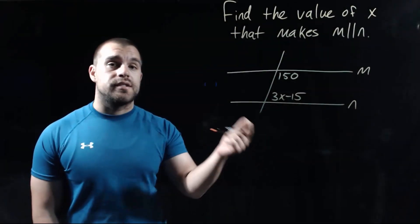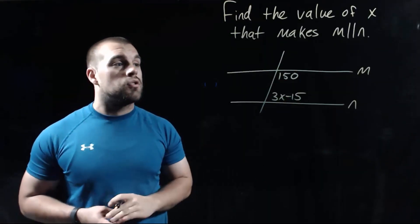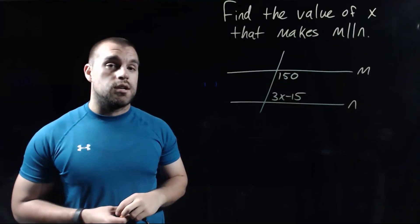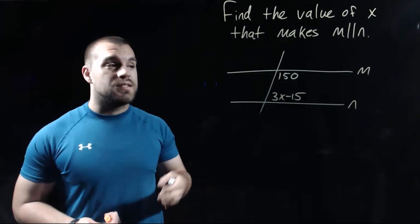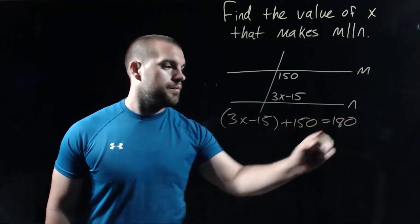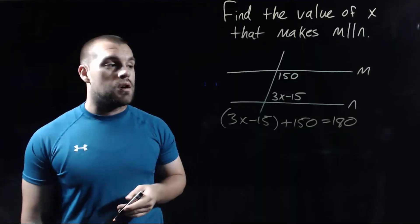Our last example is similar to the problem we just finished with. We want to find the x value that makes line m parallel to line n. These two angles we're given this time are consecutive interior angles. So we want those things to be supplementary or add up to 180 degrees. So we get 3x minus 15 plus 150 equals 180.